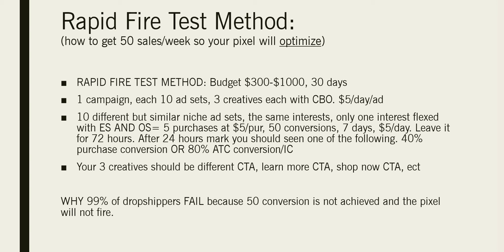This is the clear answer to how you do it: you have to get 50 conversions in seven days. Your three creatives should have different CTAs — 'Learn More,' 'Shop Now,' etc. This is why 99% of dropshippers fail — because 50 conversions is never achieved and the pixel will not fire consistently.